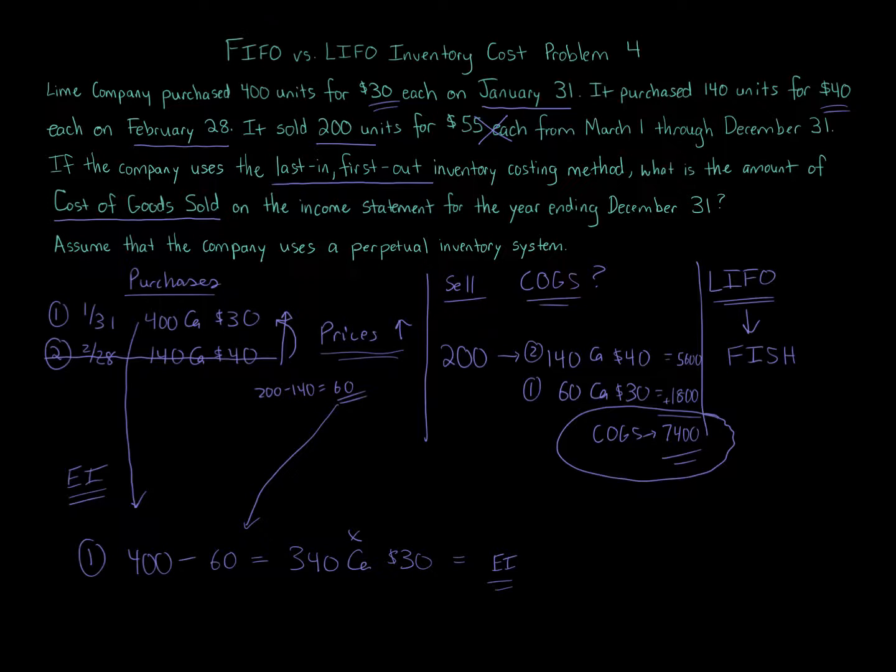But if prices decline, which that happens, think about like gasoline that goes up and goes down all the time, just reverse it. Just do the determination for prices going up and then it's a flip. So if you're looking at FIFO versus LIFO and one result results in FIFO being higher for ending inventory and LIFO being higher for cost of goods sold, then the inverse will be the results for if the prices were going to decline. Then LIFO would be the higher for ending inventory and FIFO would be the higher for cost of goods sold. That's basically what you do is flip it over.